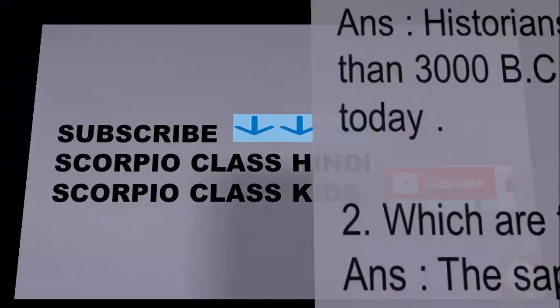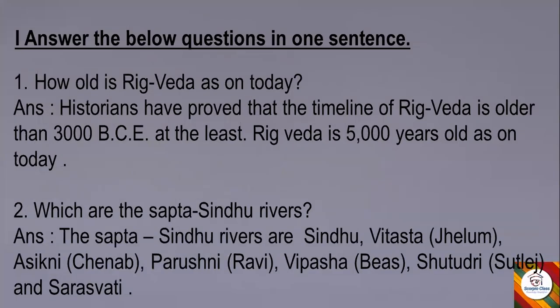Now let's move ahead with today's question and answer session. We have answered the below questions in one sentence. First question: how old is Rig Veda as on today? Answer: Historians have proved that the timeline of Rig Veda is older than 3000 BCE at the least. Rig Veda is 5000 years old as on today.